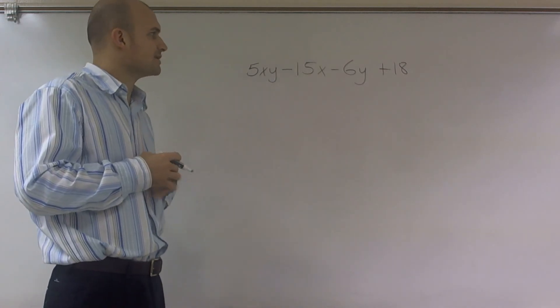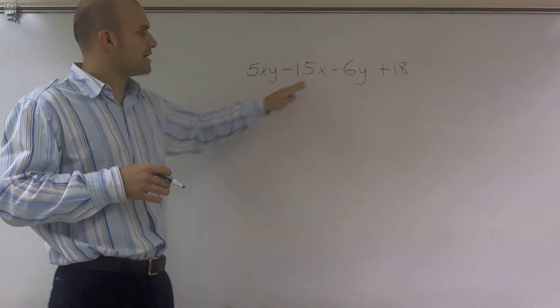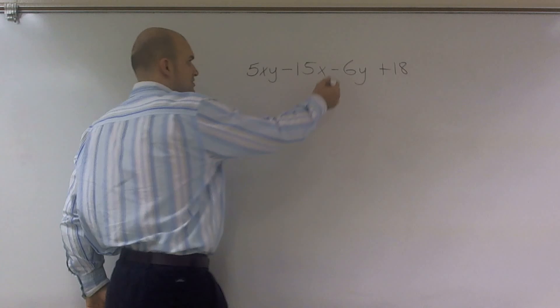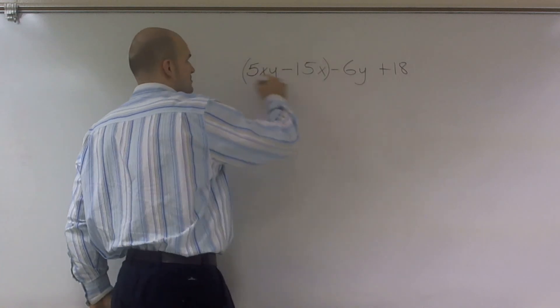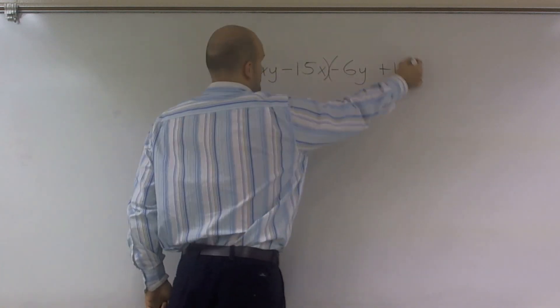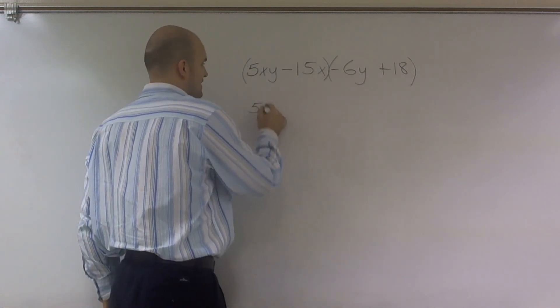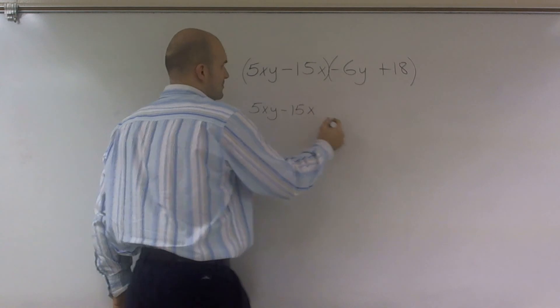So to factor by grouping, what you can do is I have these points rearranged like this. And what I'm going to do is I'm going to arrange the first two terms and the last two terms. Then what I'm going to do is I'm going to look at these separately and see, can I factor each one of these separately?